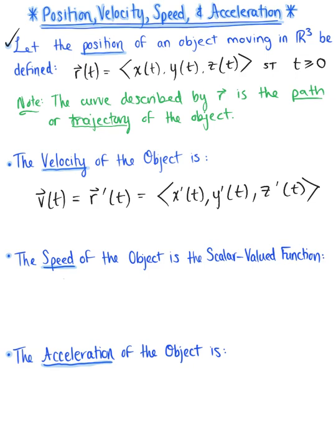And again, similar to motion in one dimension, the speed of an object moving in three dimensions is the magnitude of the velocity vector. So we can describe the speed of the object in motion by the non-negative scalar-valued function defined as follows. So the speed is the magnitude of our velocity vector.